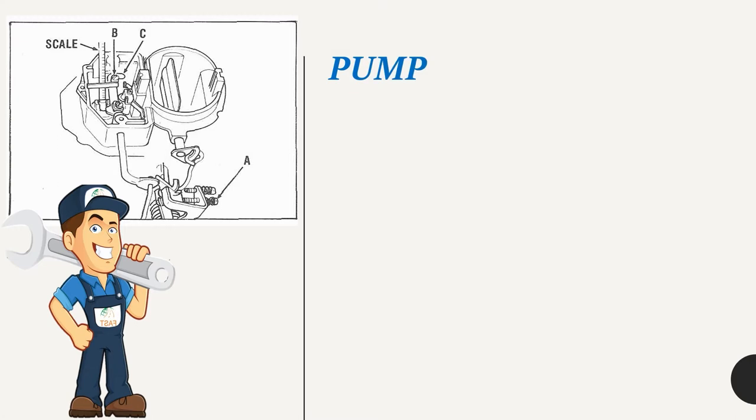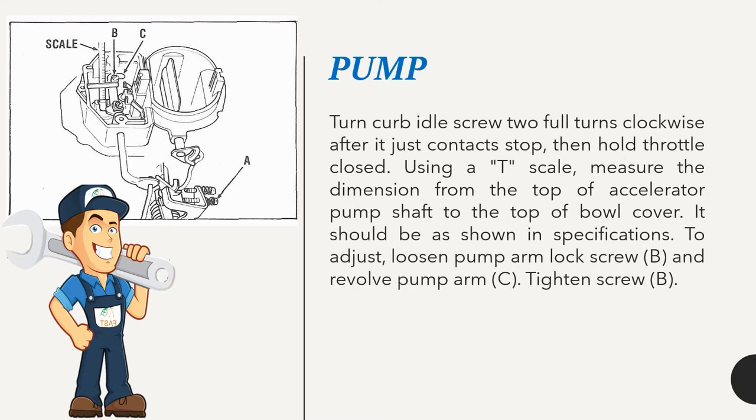Pump: Turn curb idle screw 2 full turns clockwise after adjusting contact stop, then hold throttle closed. Using a T-scale, measure the dimension from the top of accelerator pump shaft to the top of bowl cover; it should be as shown in specifications. To adjust, loosen pump arm lock screw B and revolve pump arm C, then tighten screw B.